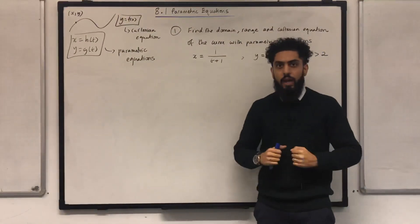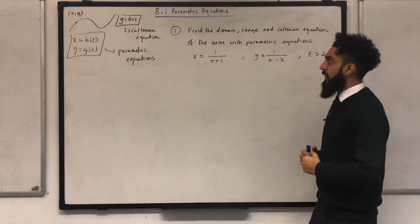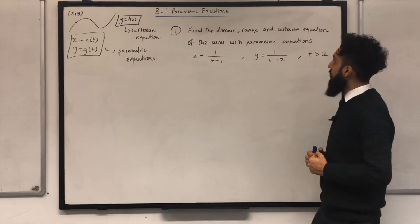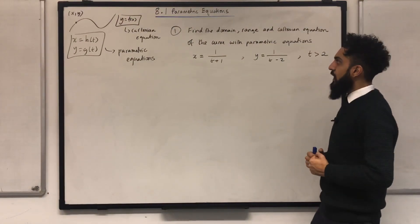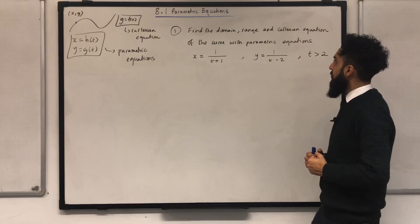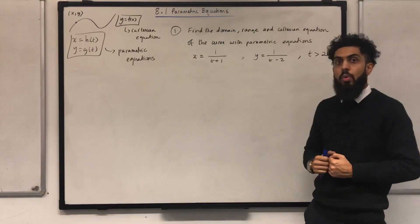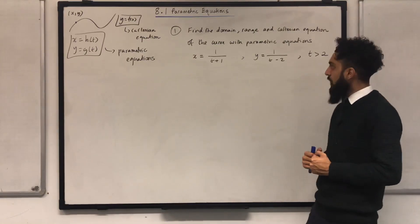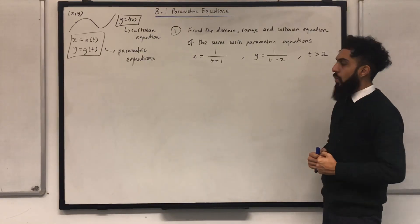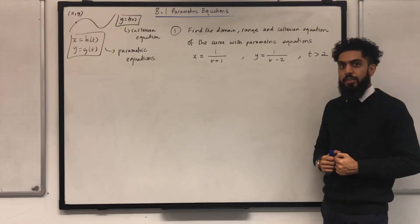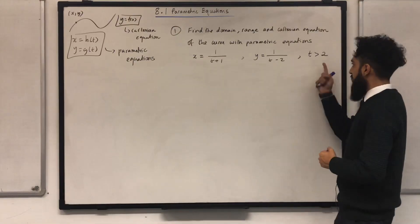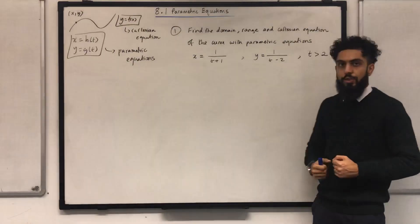Let's have a look at question number one. It says find the domain, range and Cartesian equation of the curve with parametric equations x equal 1 over t plus 1, y equal 1 over t minus 2, with restriction t is greater than 2.